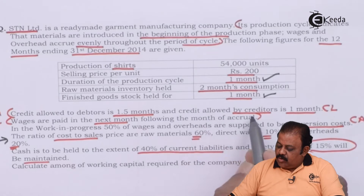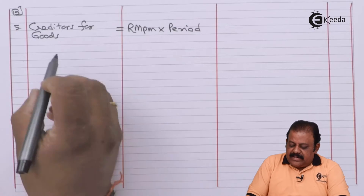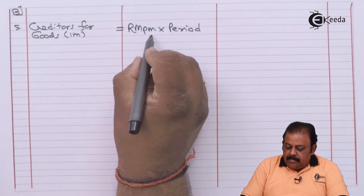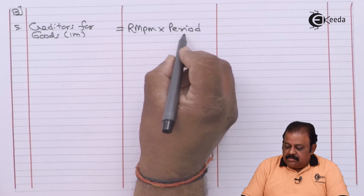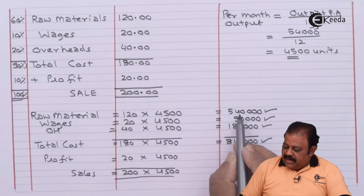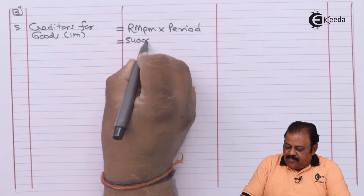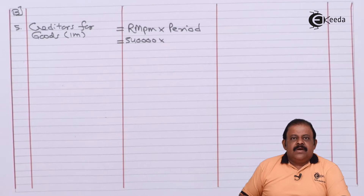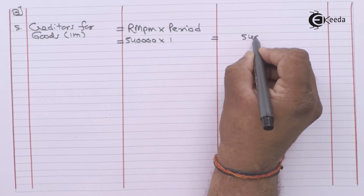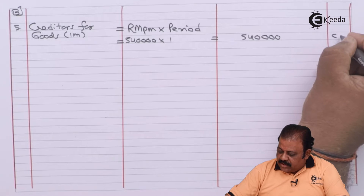Credit allowed by creditors is 1 month — we calculate creditors for goods for 1 month. Raw material per month rupees 5,40,000 multiplied by period of 1 month equals rupees 5,40,000. This will be part of current liabilities.